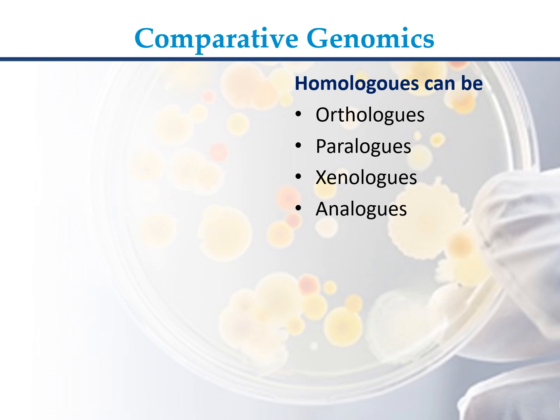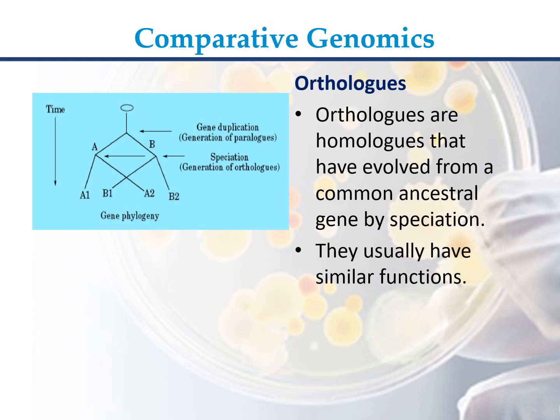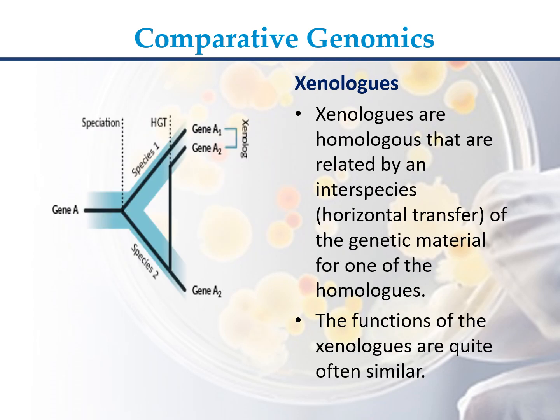Homologues can be Orthologues, Paralogues, or Xenologues. Orthologues are homologues that have evolved from a common ancestral gene by speciation; they usually have similar functions. Paralogues are homologues related or produced by duplication within a genome followed by subsequent divergence; they often have different functions. Xenologues are homologues related by an interspecies horizontal transfer of genetic material; their functions are quite often similar.